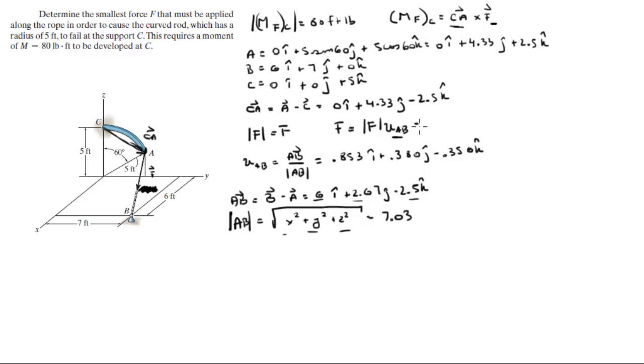So you know that F is given by the magnitude, let's call the magnitude F times the unit vector. So 0.853 F in the i plus 0.380 F in the j minus 0.356 F in the k. This is the Cartesian vector form of F.